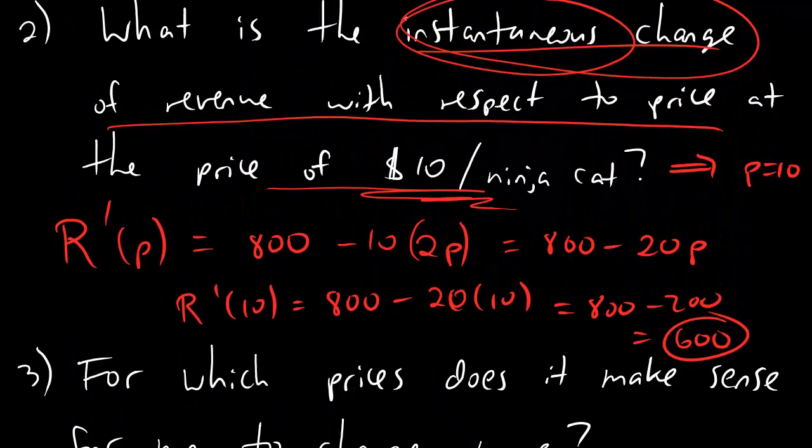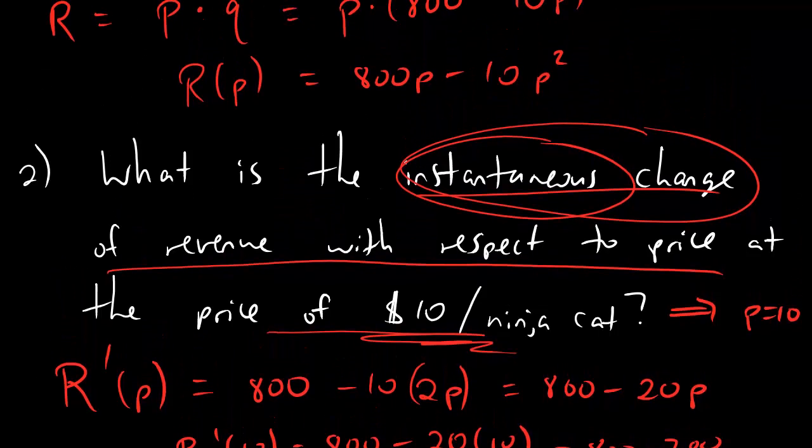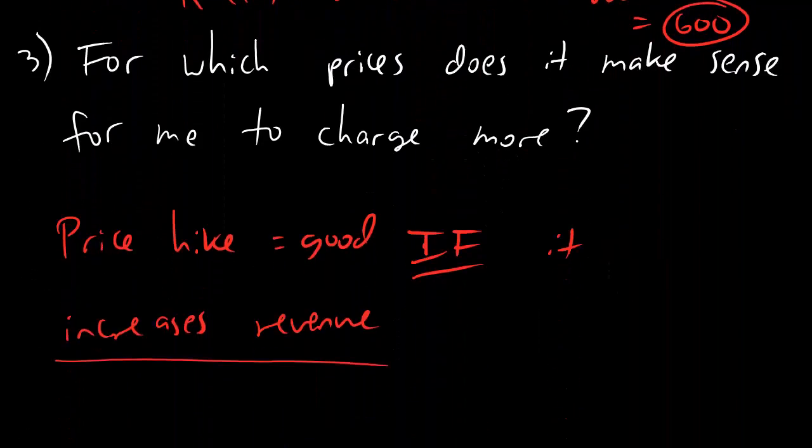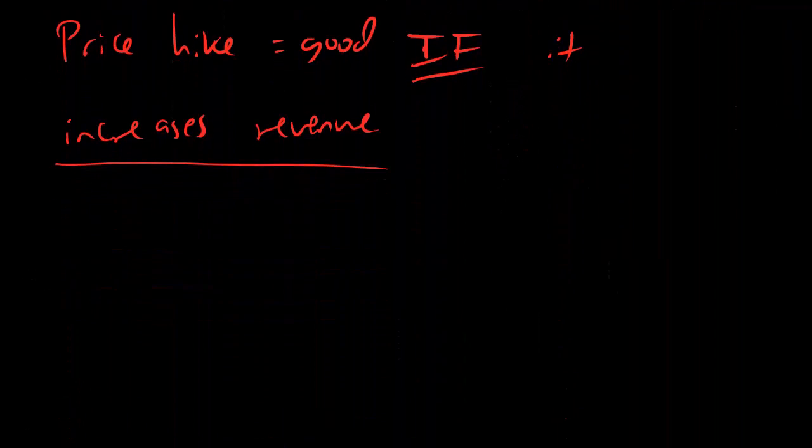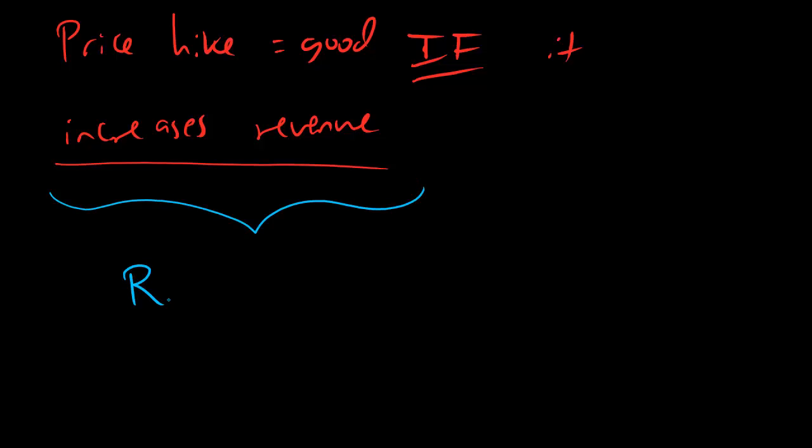And if we want that to increase, that means that the derivative should be positive. So increasing revenue is the same as the derivative being positive. That's exactly what we want to solve for. We want to increase revenue, and that's the same thing as saying we want to find when the derivative is positive.